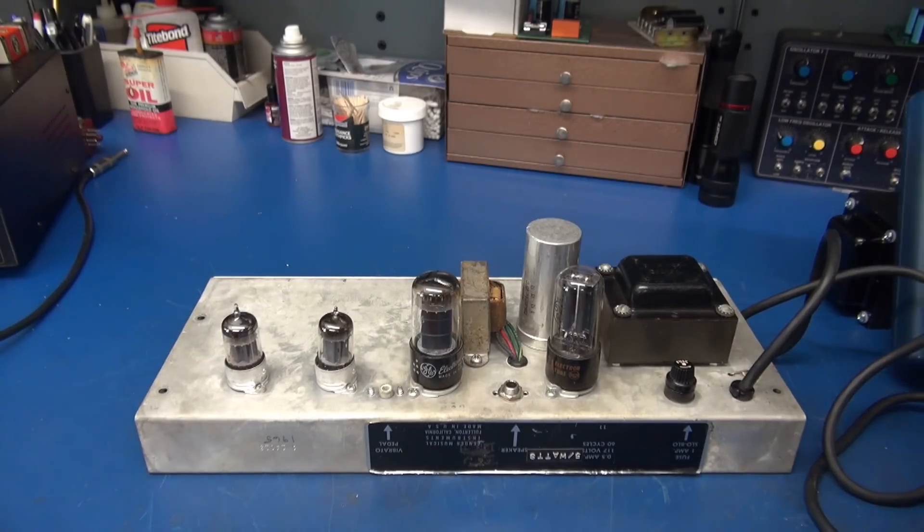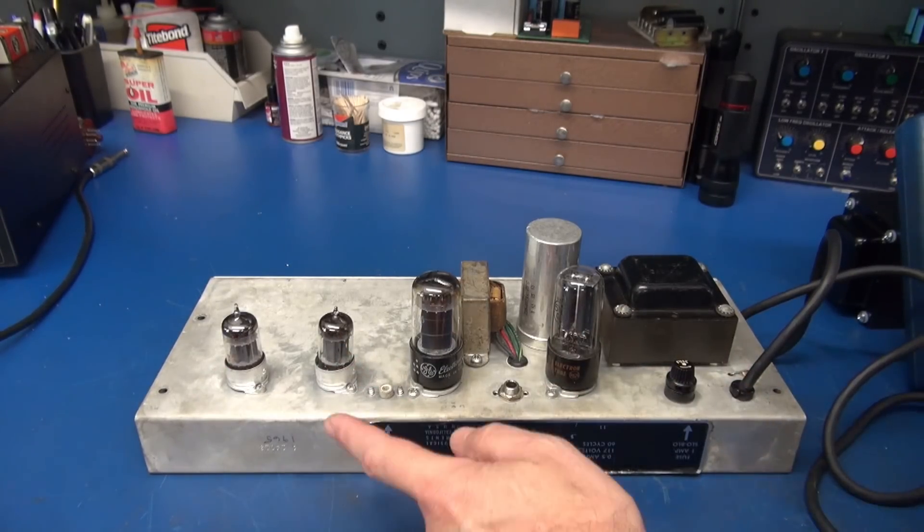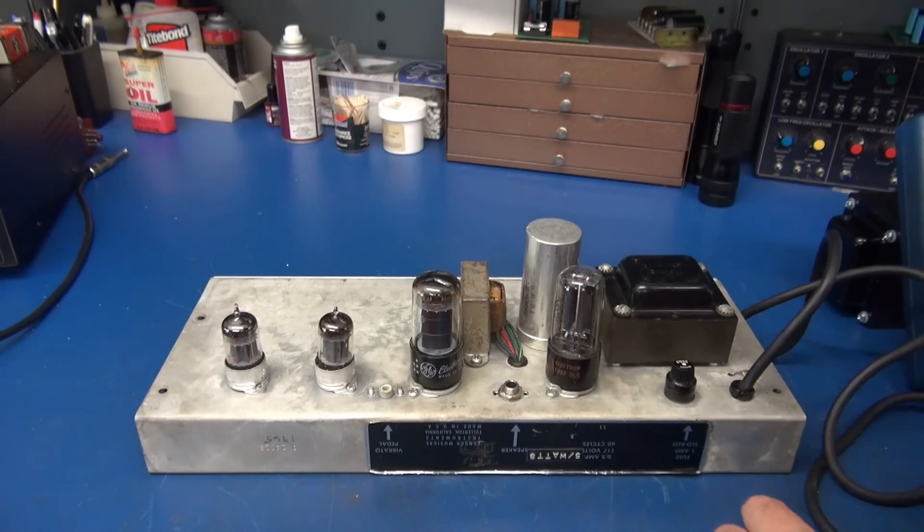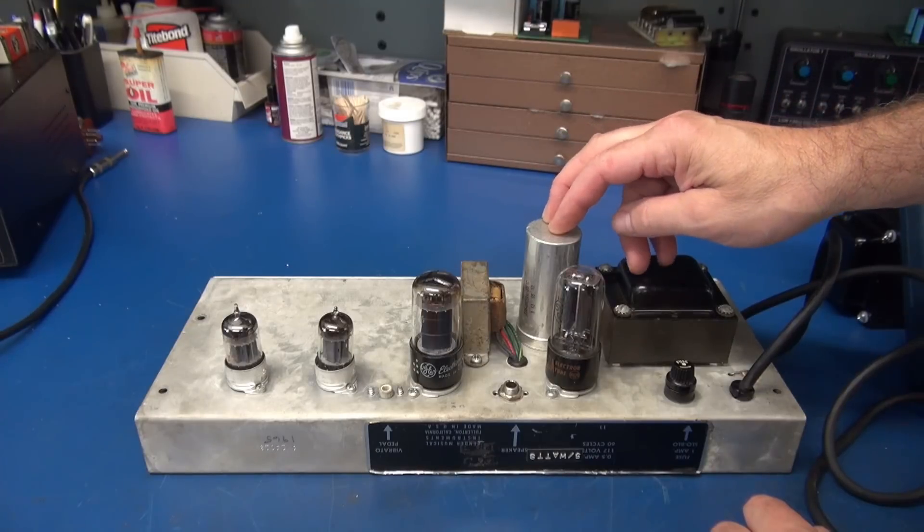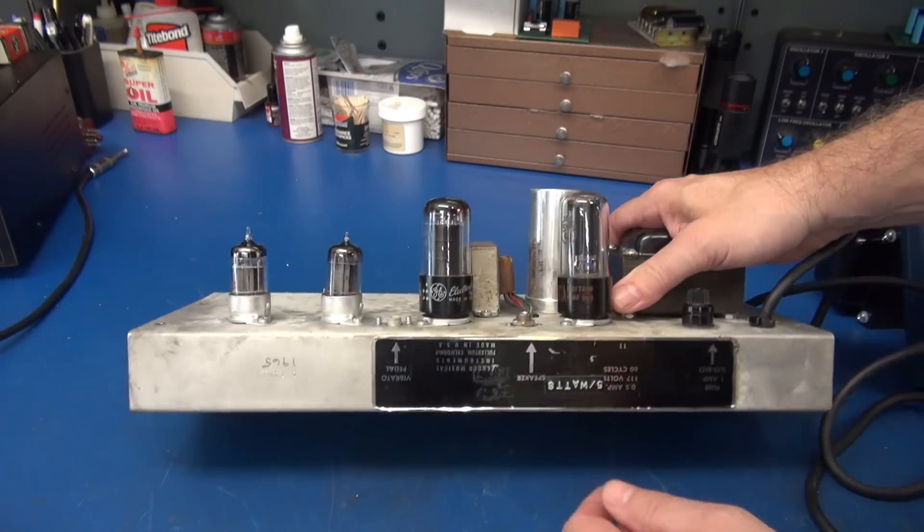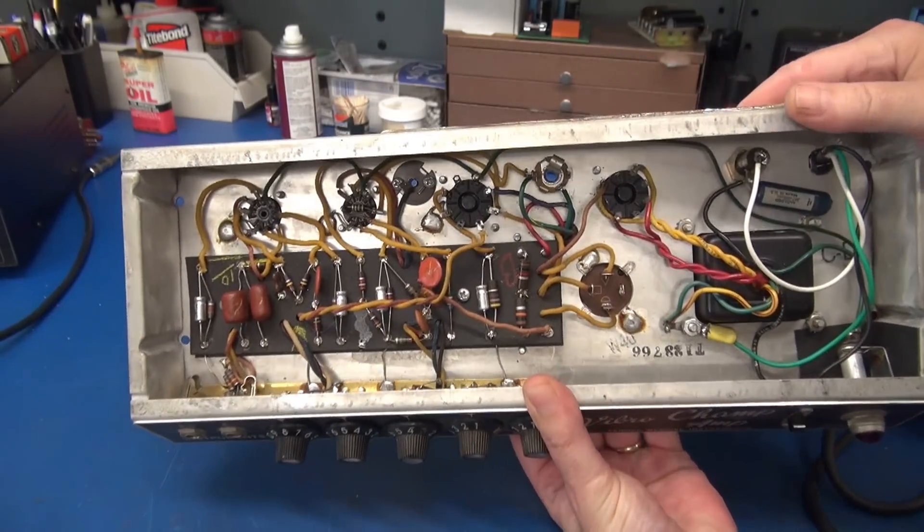A visual inspection - as you can see everything topside is stock. Got some 12AX7s, 6V6 output, 5Y3 rectifier, has the original filter cap. This is the right power and output transformer so everything up there looks great.